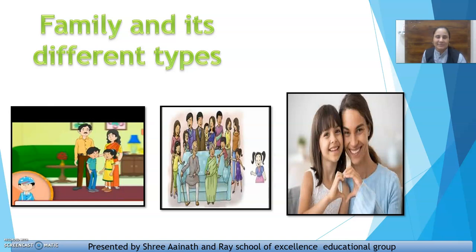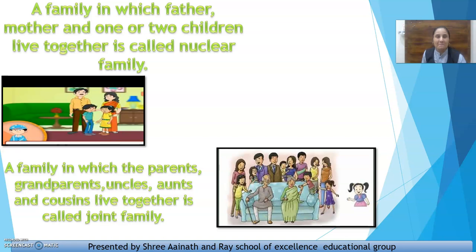In the picture you can see the different types of families: small family, big family, single parent family, etc. A family in which father, mother and one or two children live together is called a nuclear family — we can say a small family. Jis mein three or four people — parents, father and mother and their children — mummy, papa and their children — three to four people when they are together, they are a nuclear family or a small family.